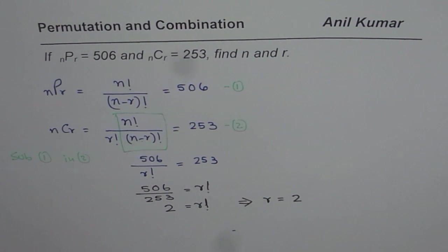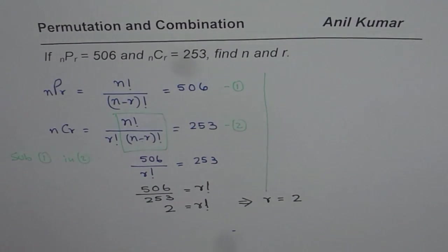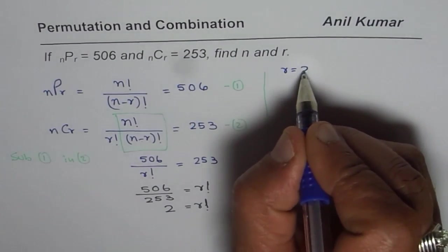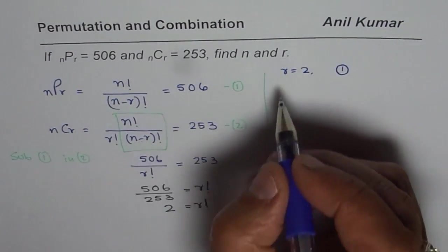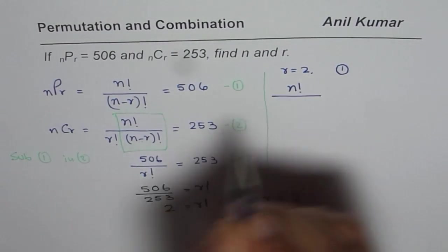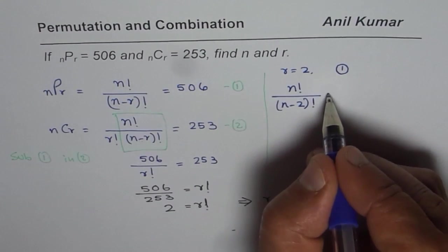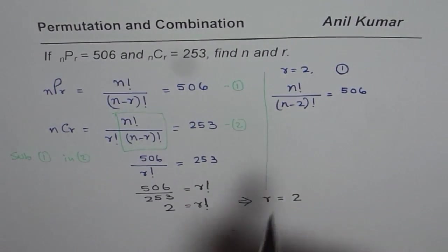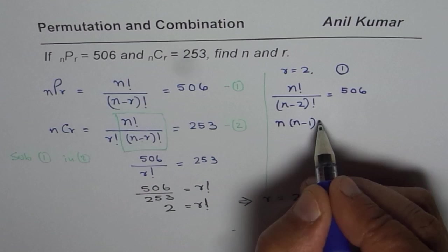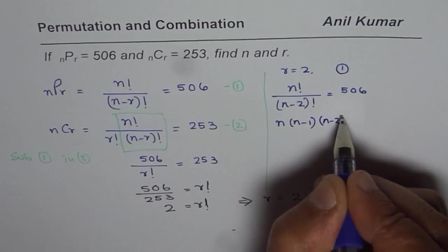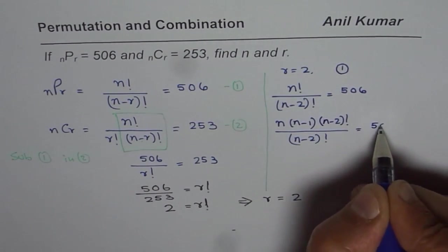Now, once you know what R is, you have to find what N is. We know R equals 2, so we get back to equation 1, which is N factorial divided by N minus 2 factorial equals 506. We are replacing R with 2 now. N factorial divided by N minus 2 factorial can be written as N times N minus 1 times N minus 2 factorial, divided by N minus 2 factorial, and that equals 506.